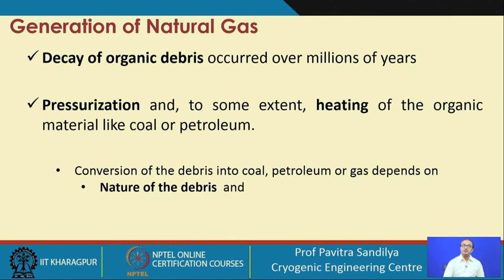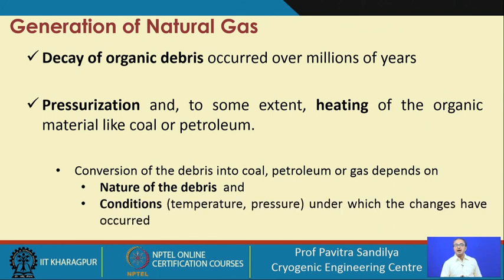The conversion of debris into coal or natural gas depends on various factors. We find that over the earth, natural gases and petroleum are of different qualities; they may have different compositions. The reasons for these variations are the nature of the debris and the conditions under which the debris is being converted into petroleum or natural gas.